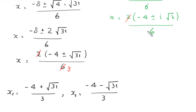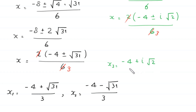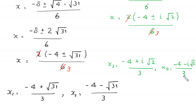From here we get the other two values of x: x₃ equals (negative 4 plus i root 2) divided by 3, and x₄ equals (negative 4 minus i root 2) divided by 3. So these are the four solutions of this equation.